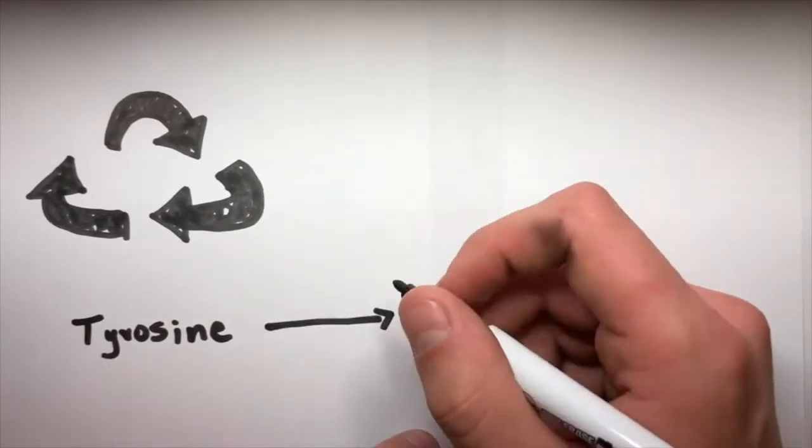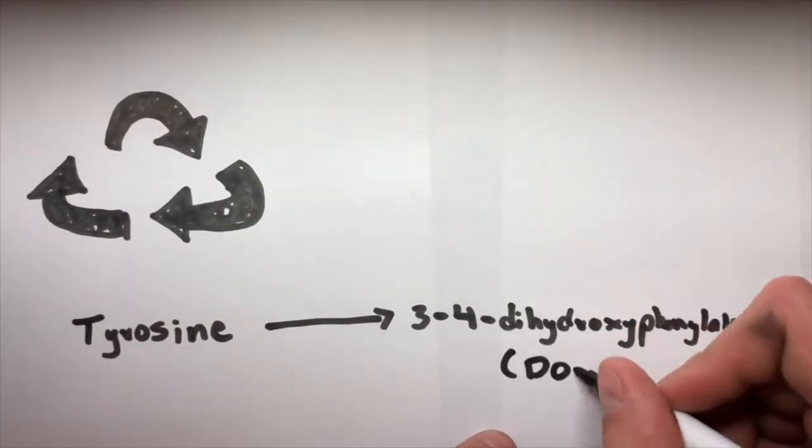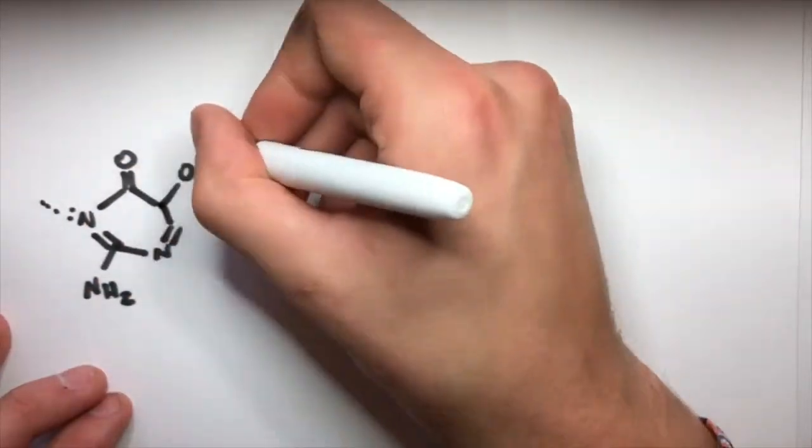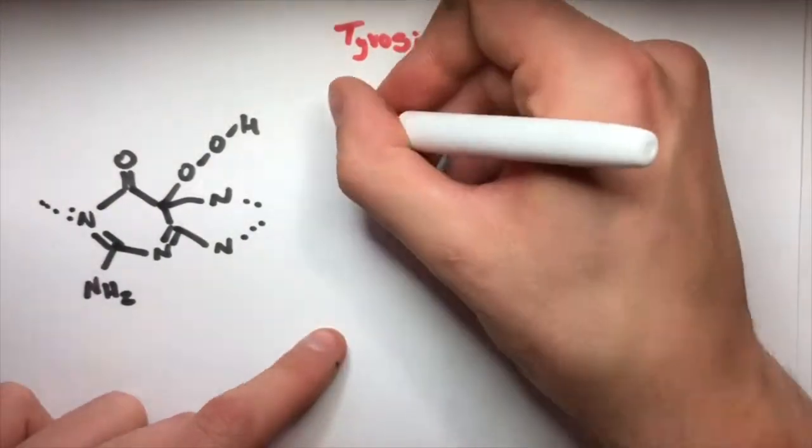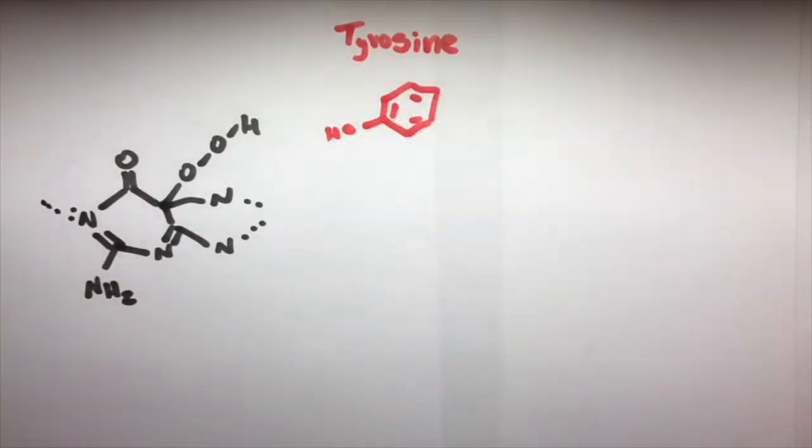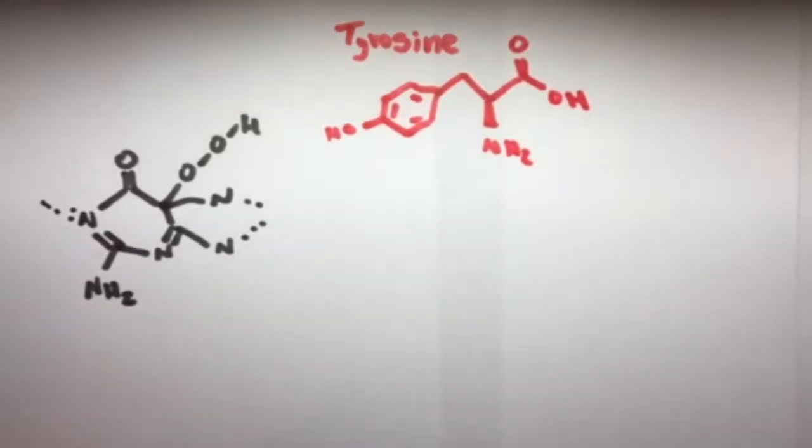The tetrahydrobiopterin molecule that we just recycled is used in the next step of the synthesis as well, showing how recycling is an important way to reduce waste in our bodies. The next reaction turns the tyrosine we just synthesized into 3,4-dihydroxyphenylalanine, DOPA for short, through tyrosine hydroxylase in a very similar reaction to the first.